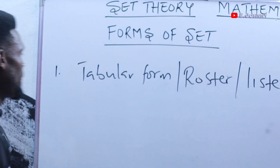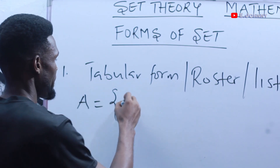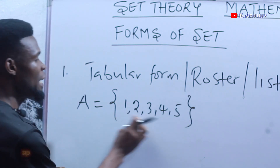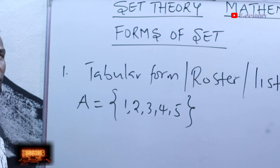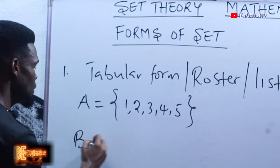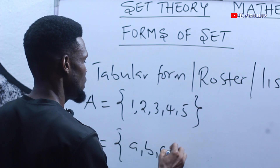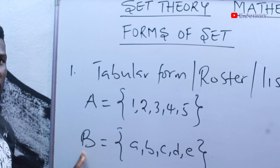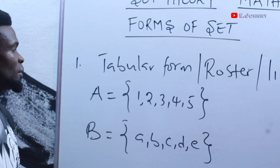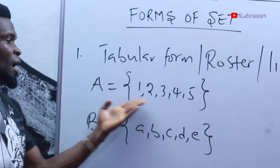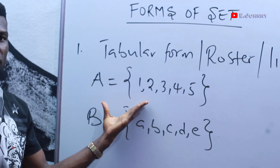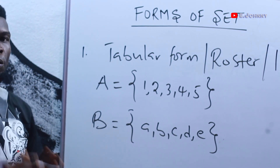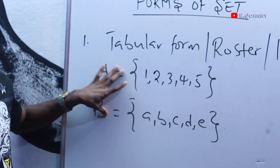For example, if I have a set A = {1, 2, 3, 4, 5, ...} — those are the elements of set A. I can also have a set B = {A, B, C, D, E, ...} — those are the elements of set B. You can see that in set A and set B, the elements are listed out for you to see.